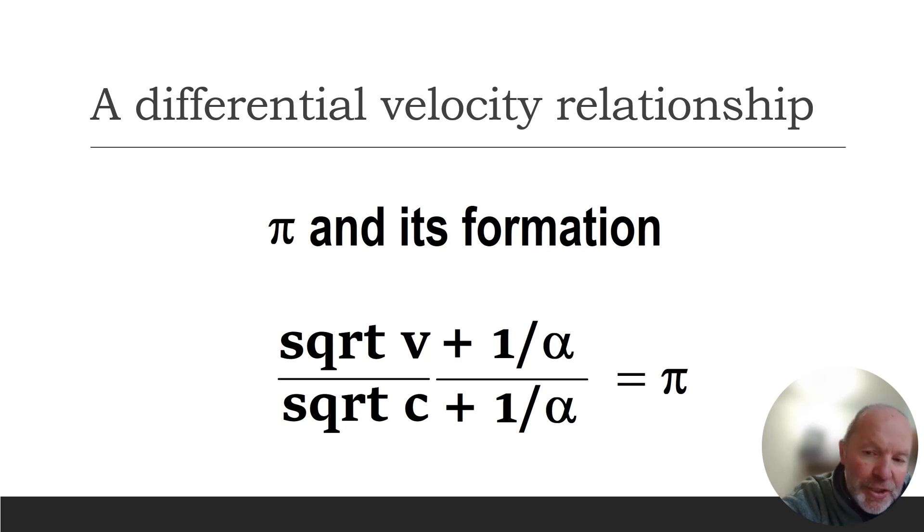So we're saying that the alpha fine structure constant is important here as well in the formation of the pi particle, and we can generate the number pi on the basis of differential velocities.